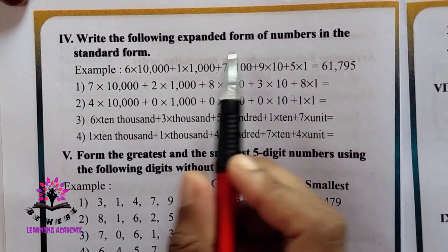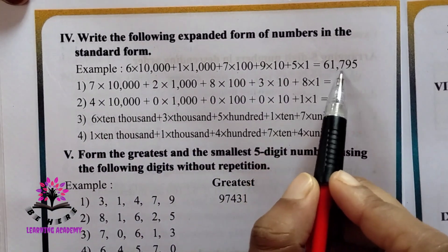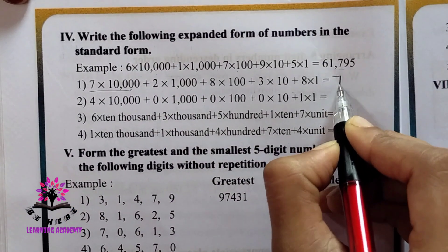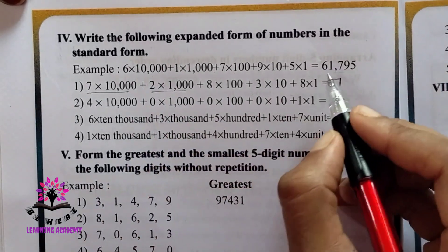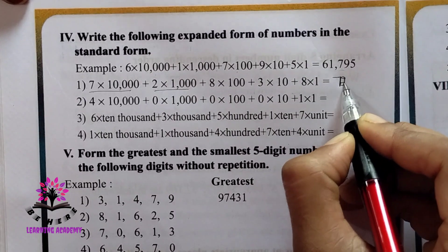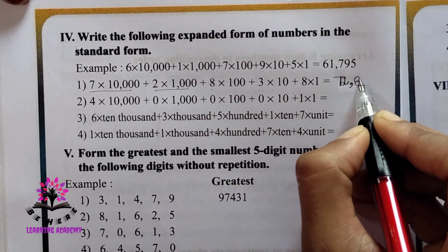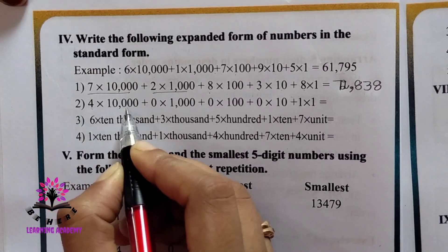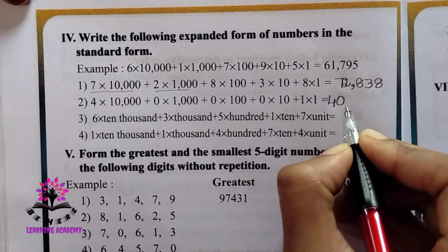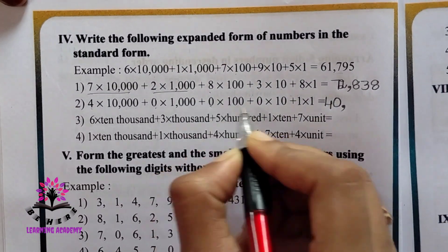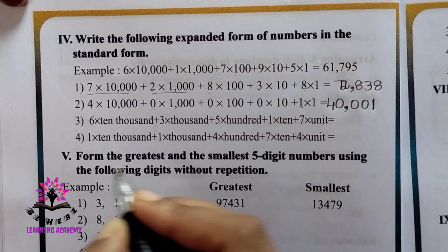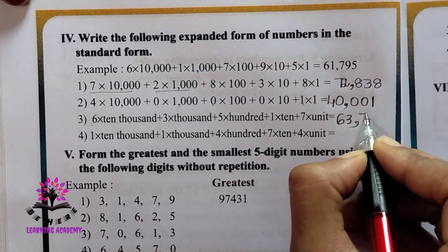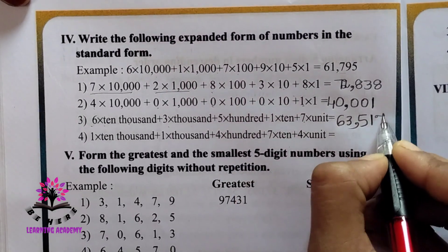Write the following expanded form of numbers in standard form. They have given the expanded form; you write the standard form. First: 7 is multiplied by 10,000 so 7 comes in the ten-thousands place, 2 in thousands, then comma, 1 in hundreds, 8 in tens, 3 in units. Next: 4 in ten-thousands place, 0, comma, 0, 0, 1. Then 6 × 10,000 + 3 × 1,000, comma, 5 × 100 + 1 × 10 + 7 × 1.